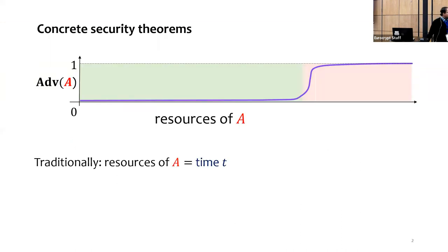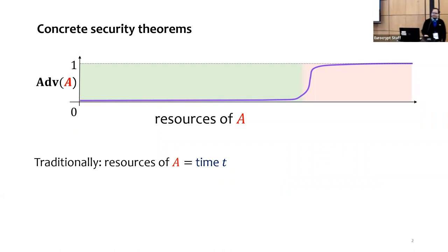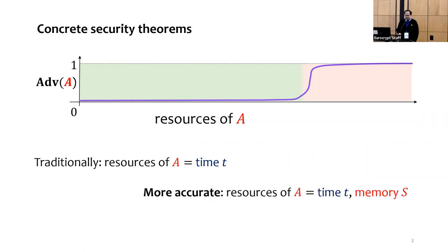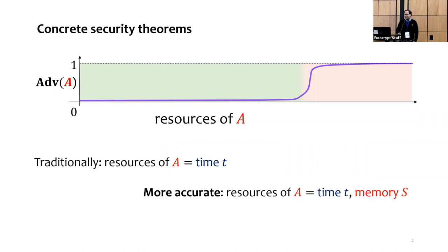Concrete security in general attempts to upper bound the advantage of an adversary in terms of its resource usage. In most prior work, the common resource considered is an adversary's time. However, to get a more accurate picture, we additionally need to consider an adversary's memory, because the feasibility of certain attacks is seriously limited by the amount of available memory.